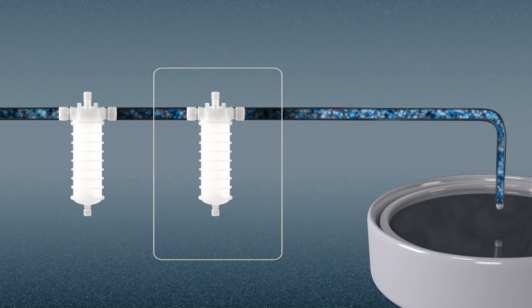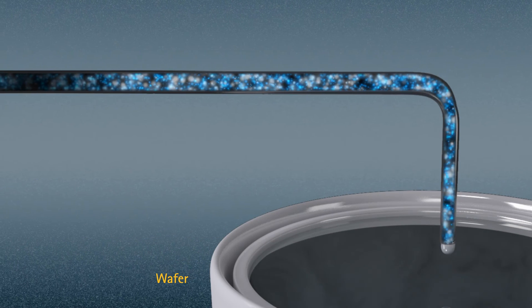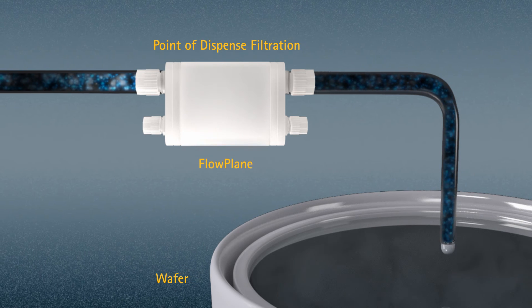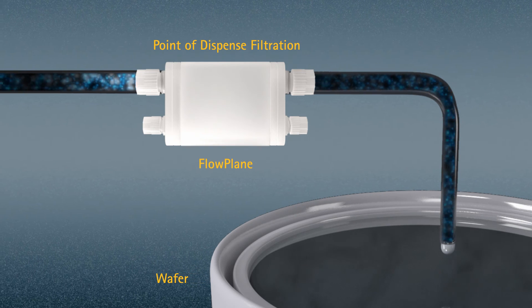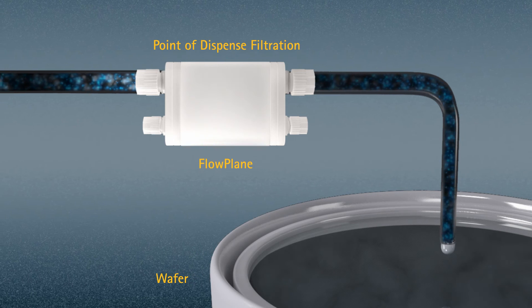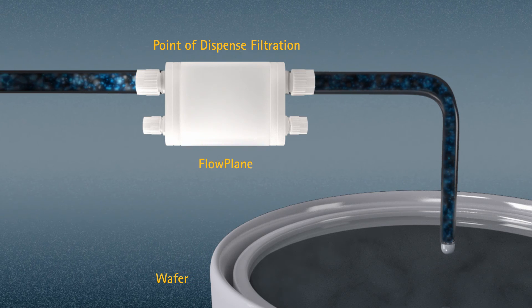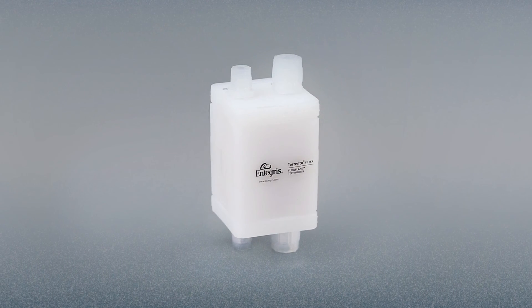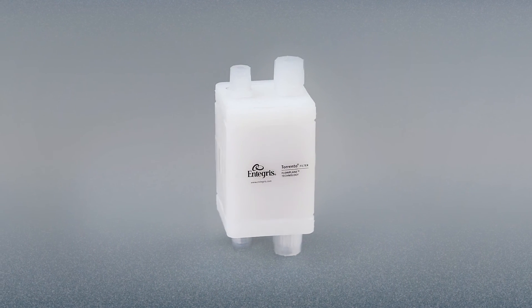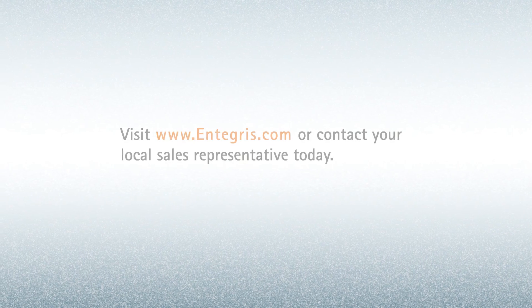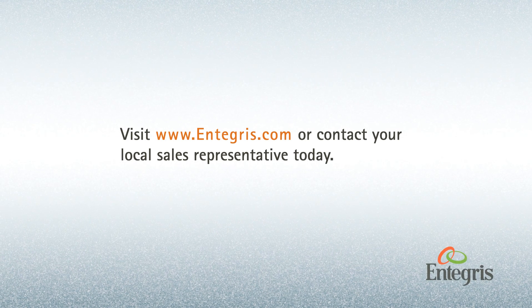The combination of small footprint, high flow rate, and advanced media makes flow plane devices uniquely suited for installation at the nozzle — a new ultimate protection point to enable reduced defectivity in our customers' most sensitive applications. The future of contamination control is now available with Integris Torrento X-Series filters with flow plane linear filtration technology.